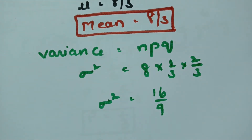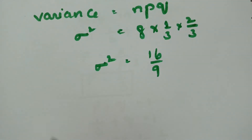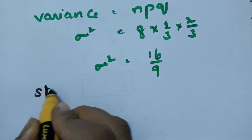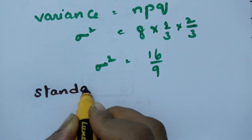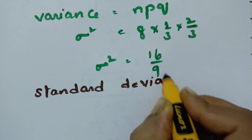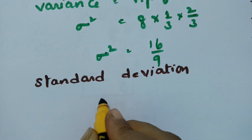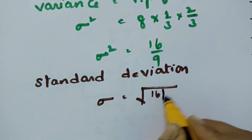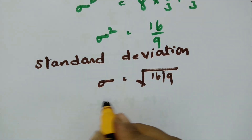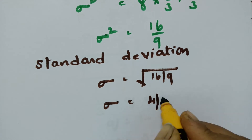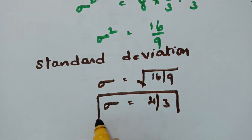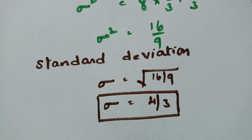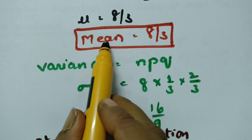Standard deviation is nothing but the square root of variance. So sigma equals root over 16 by 9, which gives sigma equal to 4 by 3. That is our standard deviation. So we have the mean, variance, and standard deviation.